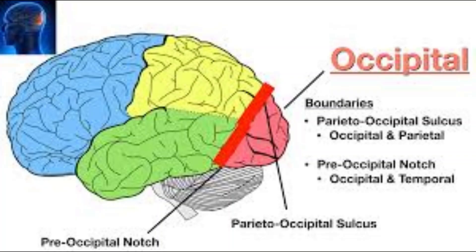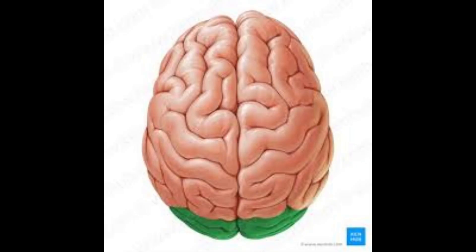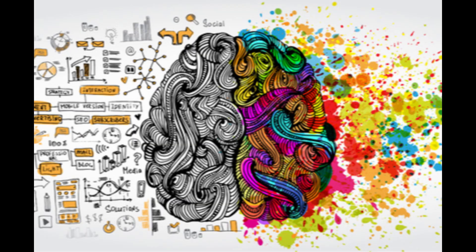Functions of the frontal lobe. Executive functions: responsible for planning, problem-solving, and decision-making. Voluntary movement: controls muscle movements through the primary motor cortex.